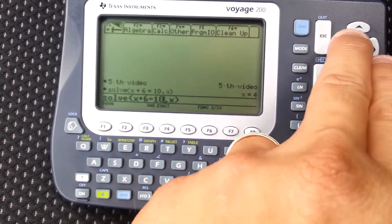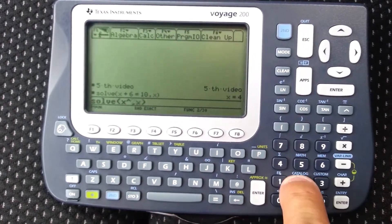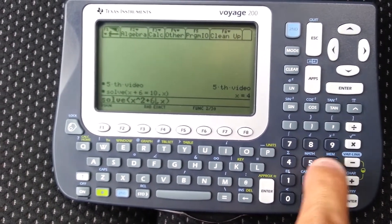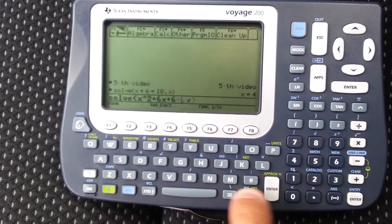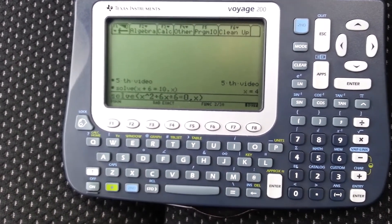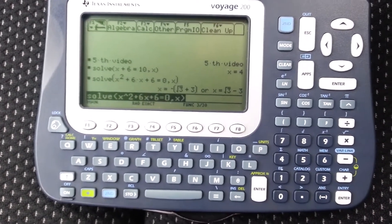Let's do something a little more complicated. Let's do x squared plus 6x plus 6 equals zero. And you get the positive and negative solutions of that quadratic equation.